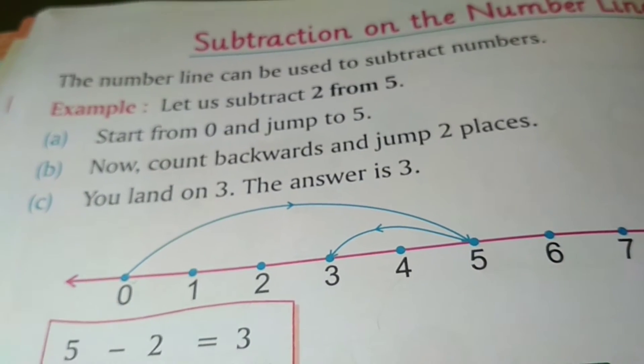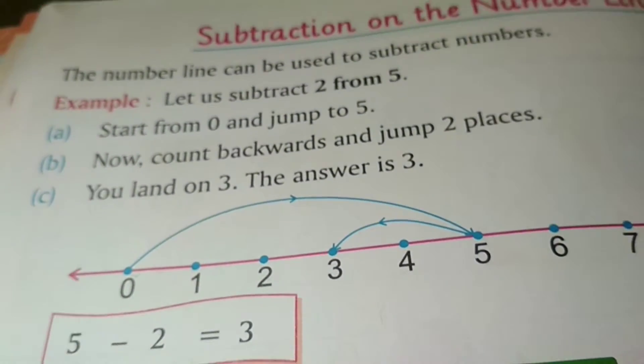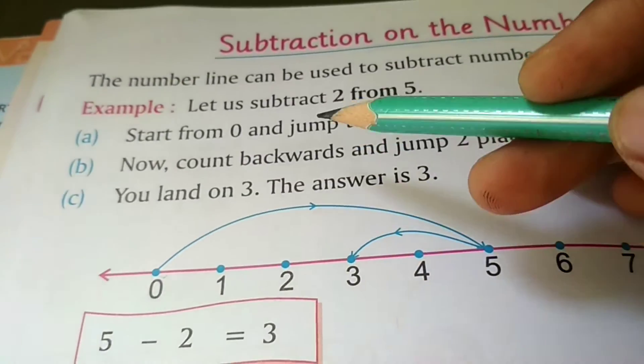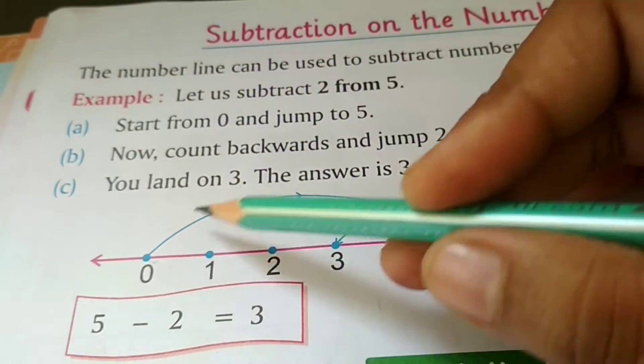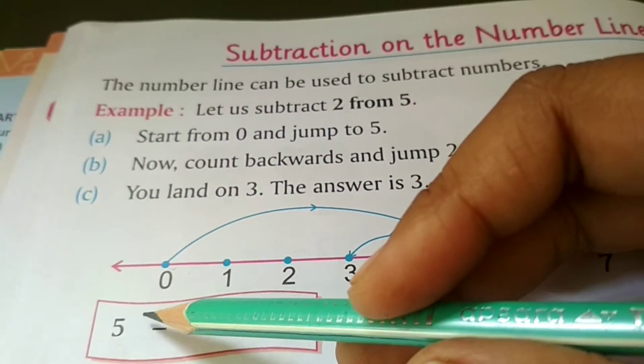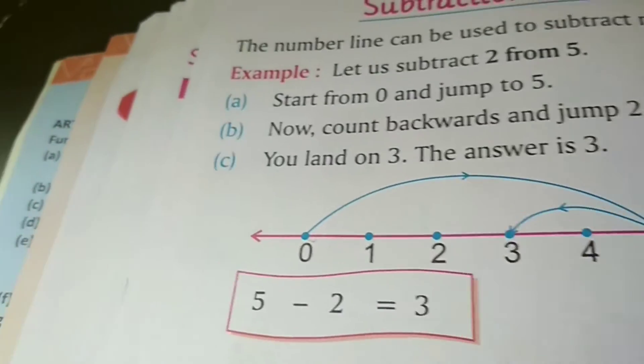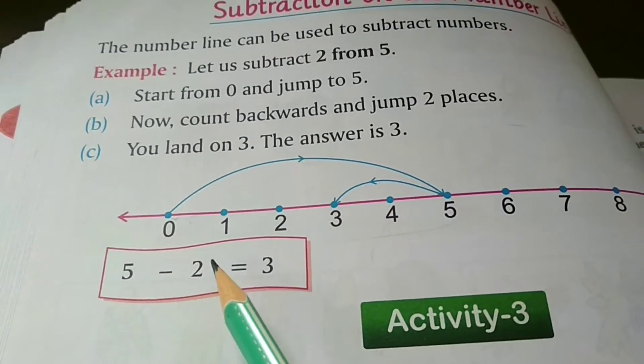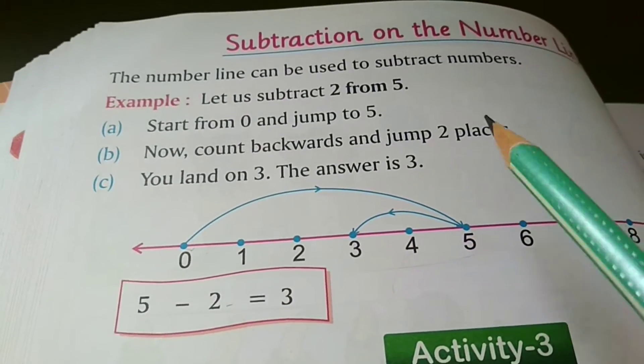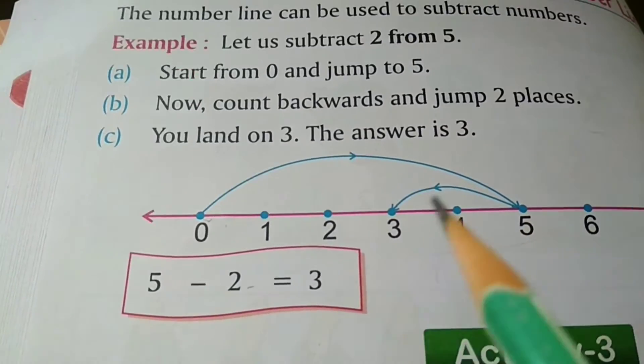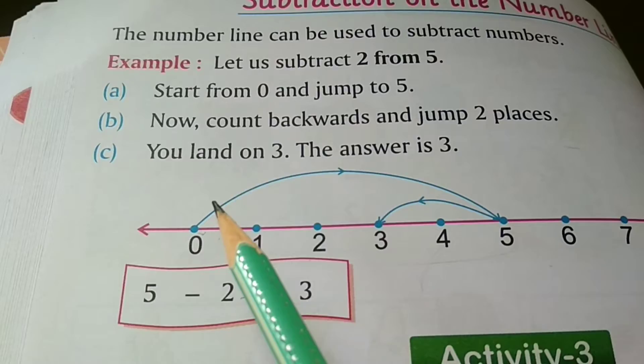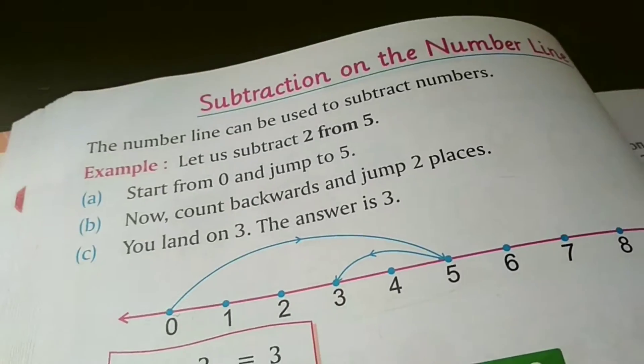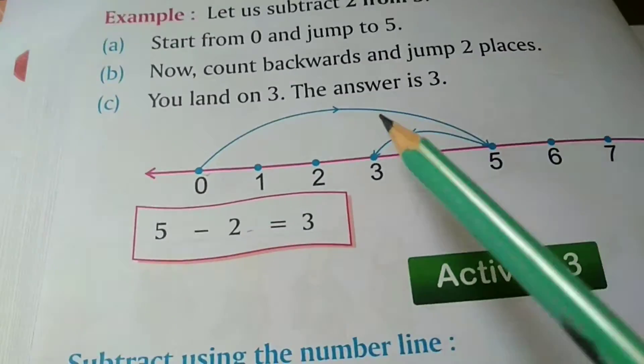Let us subtract 2 from 5 means you have to subtract 5 to take away 2. Now start from 0, you always start from 0 and jump to 5, means the number which you have to subtract from. Then come backward and jump to places, means you have to minus the number, to jump the number which you have to take away. You will land on the number. You will land on the number means that is the answer of your subtraction.